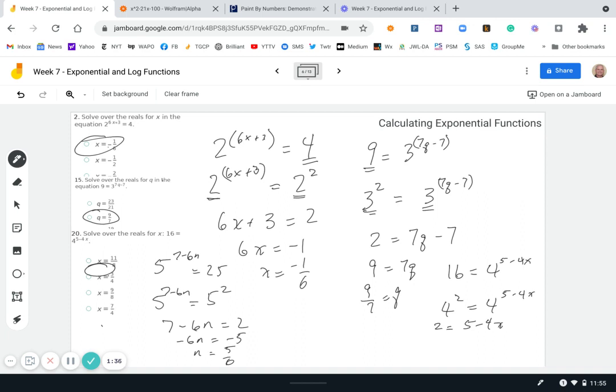2 minus 5 is negative 3 equals negative 4x. And x is going to equal, divide each side by negative 4, and you get 3/4. And we are done.